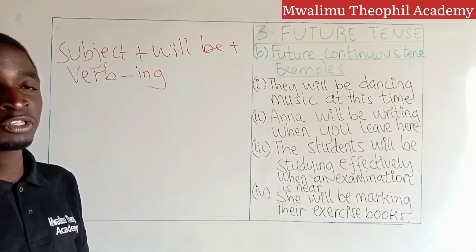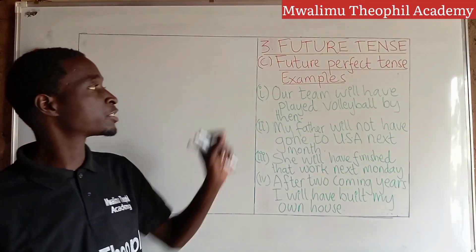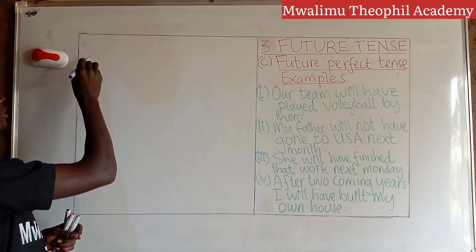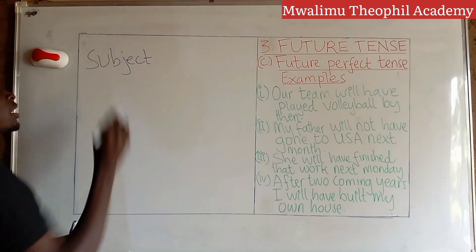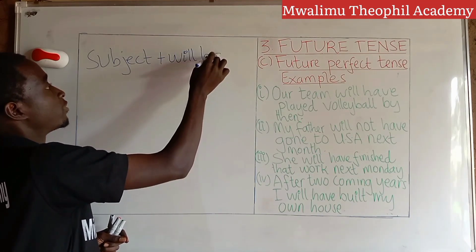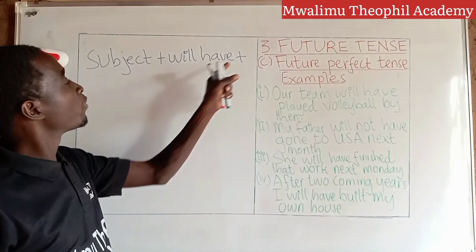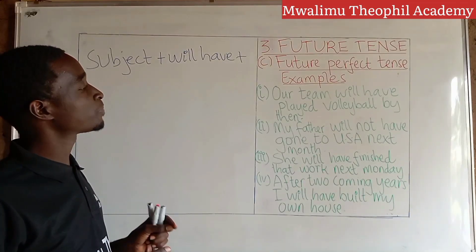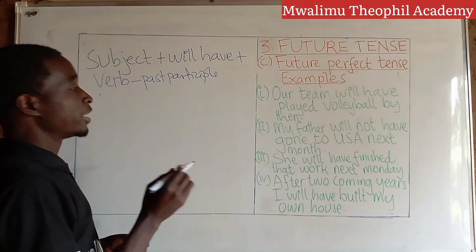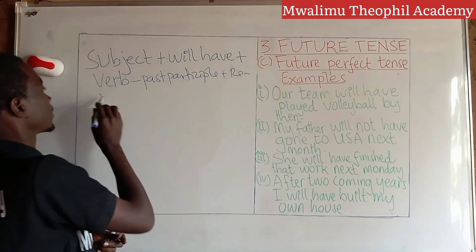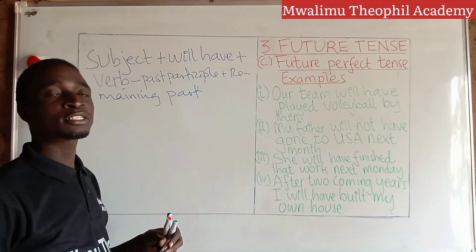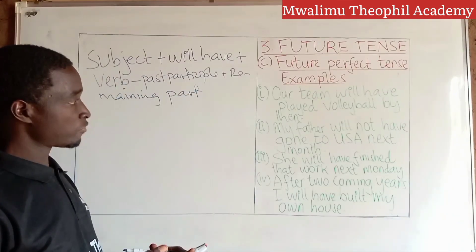Let us go to our third category of future tense: future perfect tense. Any sentence in future perfect tense should obey the following law: start with a subject, then add 'will have,' followed by the main verb in past participle, and finish with the remaining part of the sentence. This is the general rule for constructing any sentence in future perfect tense.